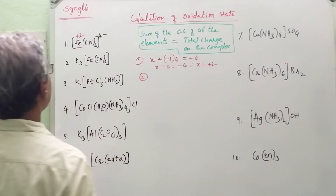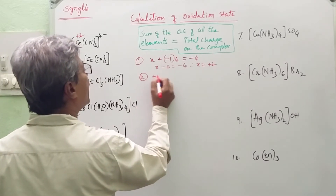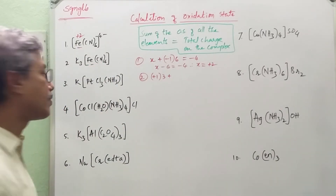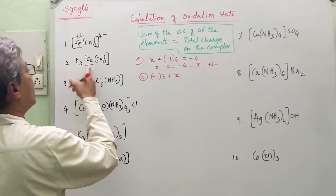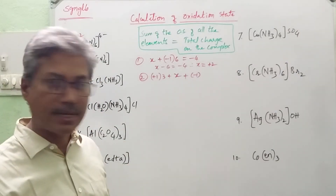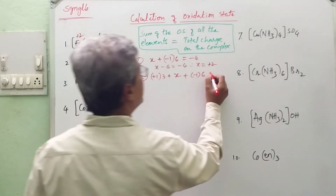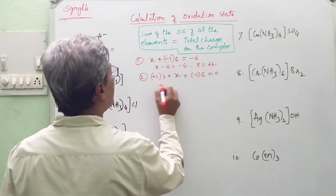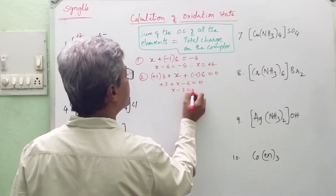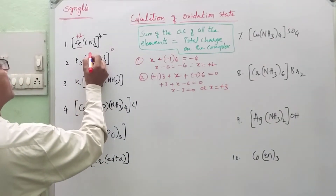Now let us go for the second example. It is an alkali metal with charge +1, appearing 3 times, giving 3 × (+1). Plus the oxidation state of the central metal x (once). Plus cyanide, whose charge is minus 1, appearing 6 times. The total charge on this complex is 0. This means: +3 + x − 6 = 0, so x − 3 = 0, therefore x = +3. The oxidation state is +3.